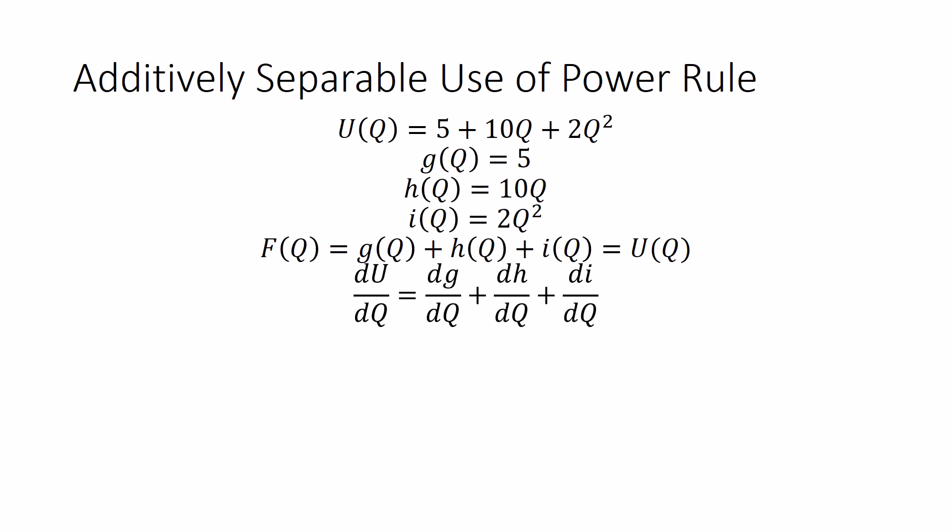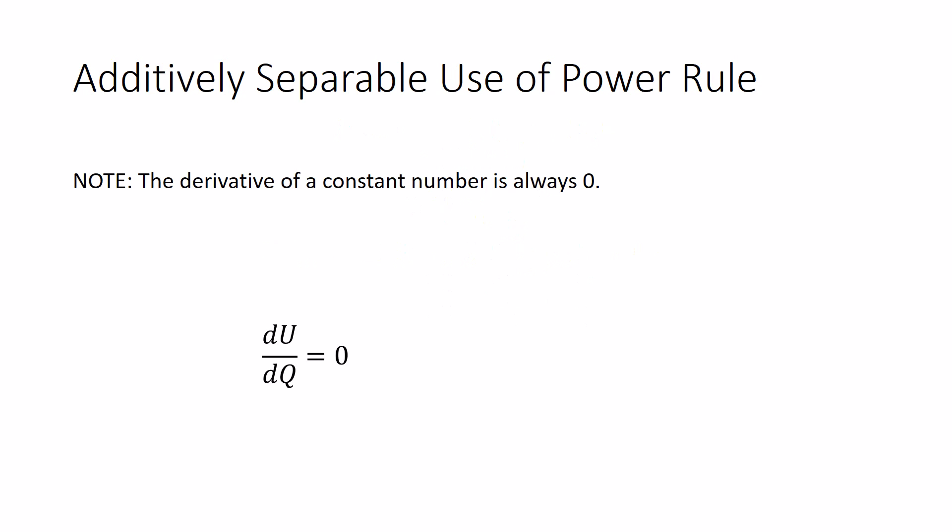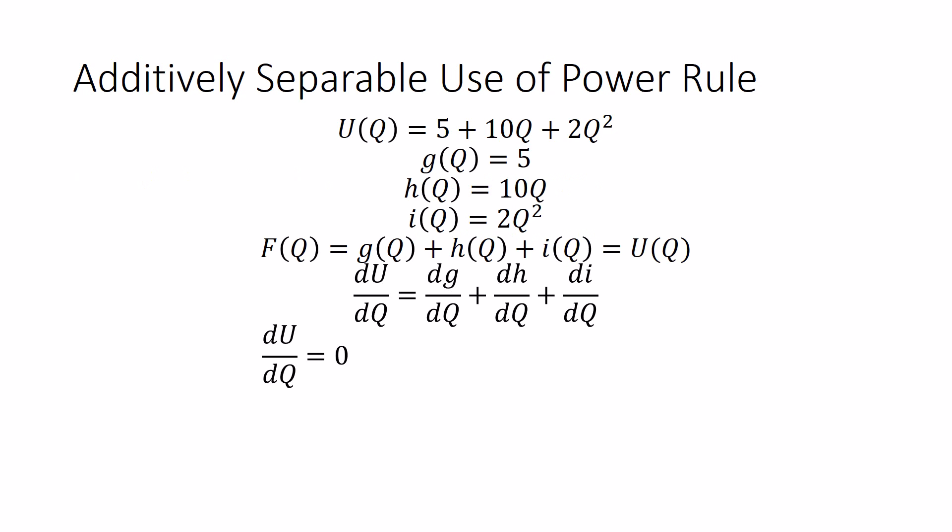If we do this, the derivative of the utility function with respect to q is the derivative of each of those pieces added separately. dg/dq plus dh/dq plus di/dq is du/dq. Okay, so that means we have to take the derivative of each of those small sub-functions separately. Well, du/dq is going to be 0 for the first piece. Because remember, the derivative of a constant number will always be 0. Its rate of change is 0. Okay, so there's the first piece. Second piece, dh/dq. It's going to be 10. Then bring your exponent on the q down. It's just 1 times q to the 1 minus 1. It's your full power rule approach to it. And for your i function, 2 times 2, we brought the exponent down, times q to the 2 minus one. Let's simplify this and see what we get.